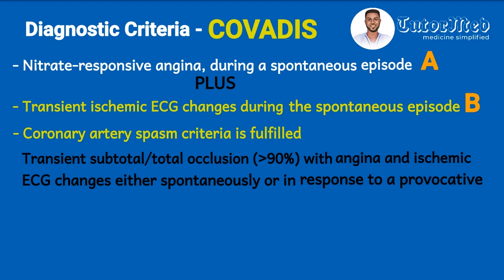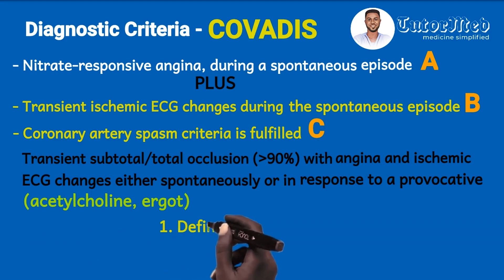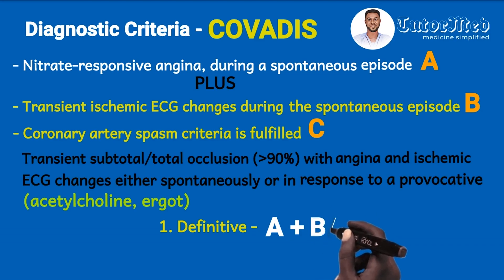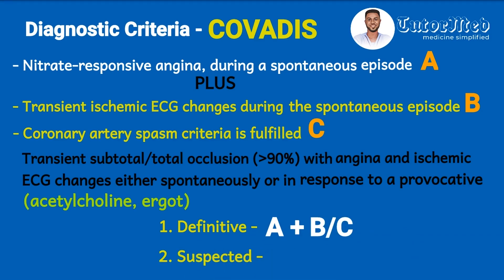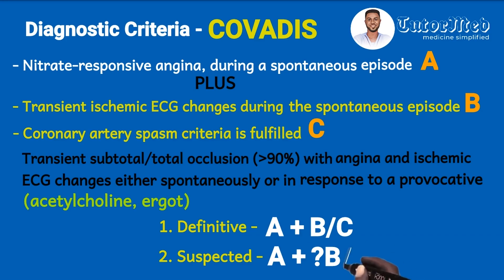The provocation involves giving acetylcholine or ergot to bring about the coronary artery spasm. A definitive diagnosis of vasospastic angina is made if criterion A is present with either B or C. A suspected diagnosis is made if A is present but B and C are equivocal — meaning we are not certain whether they are present or not.